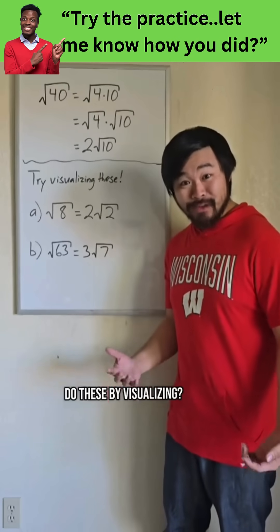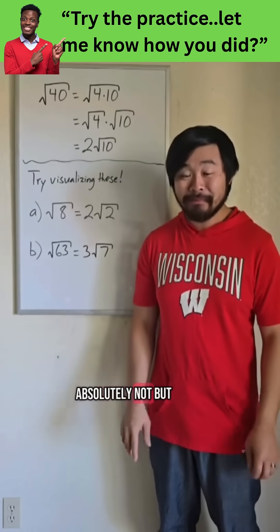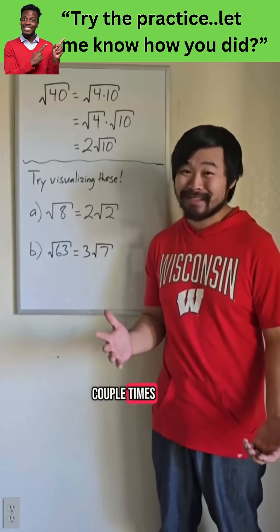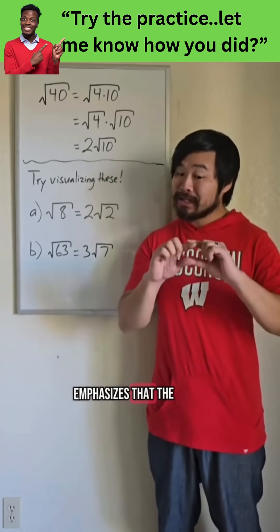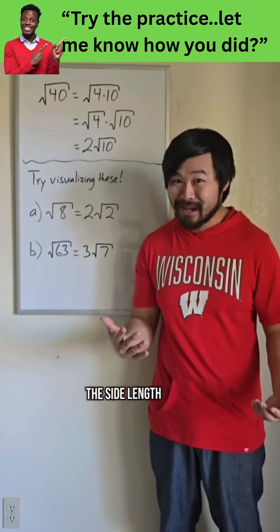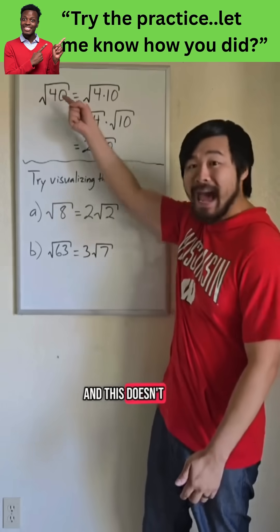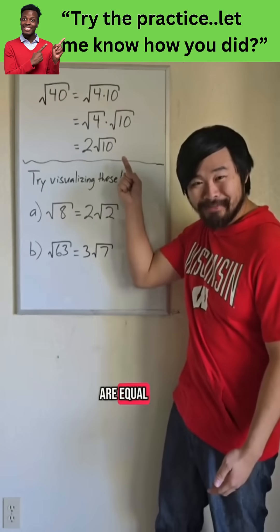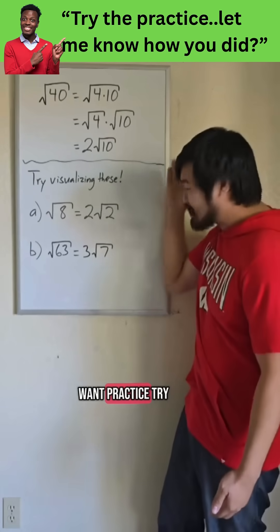Now am I saying to always do these by visualizing? Absolutely not. But I do think it's a cool visual that we should all see at least a couple times, because it really emphasizes that the square root is literally the side length of a square. And this doesn't have to stay in the abstract. We can visually see why these are equal. So if you want practice, try these out.